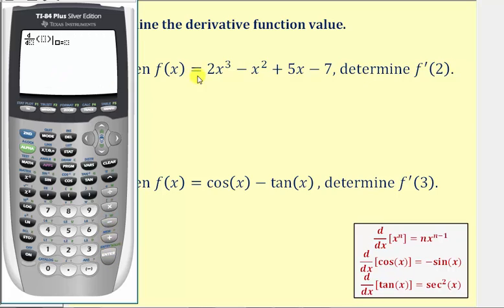Next, because we're finding the derivative with respect to x, we enter x here. Next, we enter the function, which is two x cubed. So two x, here's the exponent key. The exponent is three. To get out of the exponent position, we press the right arrow, and then minus x, here's the squared key, plus five x minus seven.